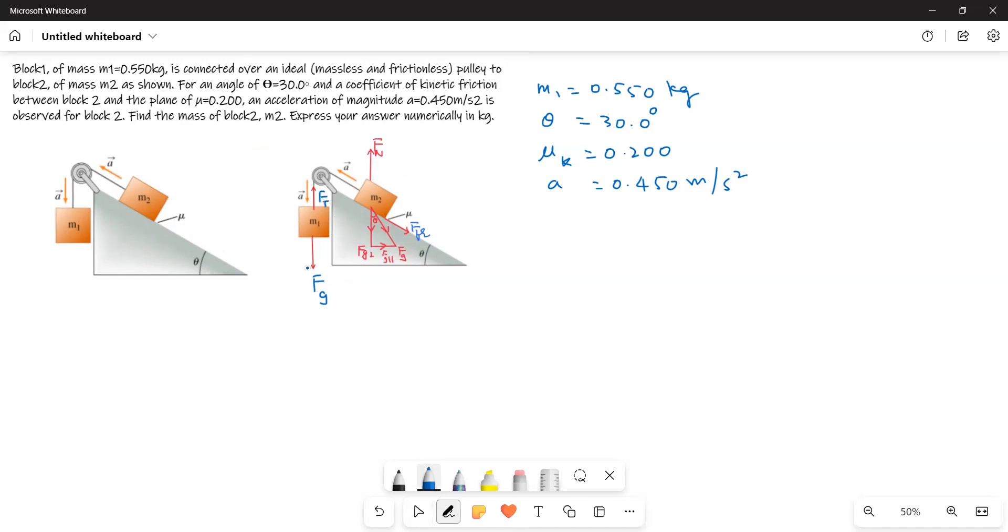Now, as the block is going down, we will write force equation for M1. Sigma Fy is equal to Fg minus Ft is equal to M1a. Fg is equal to, now I take one more thing, G is equal to 10 meters per second squared. Now Fg is equal to Mg, or here it is M1g.